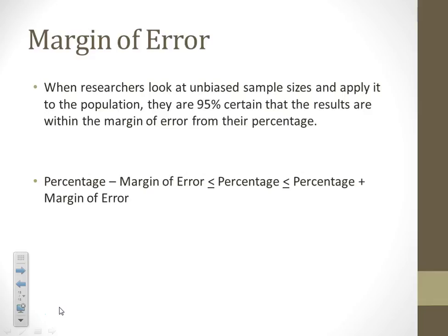Margin of error is something you're probably already familiar with. The most common example is watching the news before a presidential election — they always say this candidate has 51% of the votes with a margin of error of plus or minus 3%. They're just taking a sampling of people, whether a stratified sample by region or focusing on certain regions. So if they say this candidate has 51% of the vote with a margin of error of plus or minus 3%, that means they've really got somewhere between 48% and 54% of the vote.